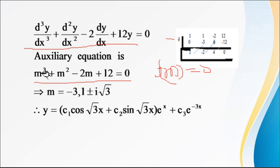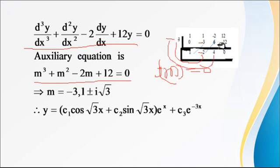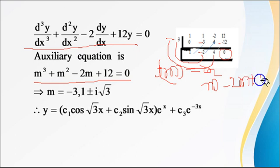To find the remaining roots using synthetic division, write the coefficients: 1, 1, −2, 12. Using root −3: bring down 1; multiply 1 × (−3) = −3, add to 1 to get −2; multiply −2 × (−3) = 6... wait, multiply (−3) × (−2) = 6, but correcting: −3 × 1 = −3; 1 + (−3) = −2; −3 × (−2) = 6; but −2 + 6 = 4; −3 × 4 = −12; 12 + (−12) = 0. This confirms −3 is a root.